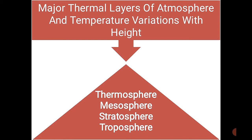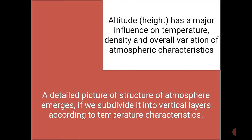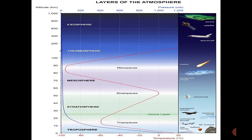Hello everyone, welcome to my channel. Today our topic under discussion is temperature variations with height in the major thermal layers of atmosphere. The major thermal layers are troposphere, stratosphere, mesosphere, and thermosphere. Altitude has a major influence on temperature, density, and overall variation of atmospheric characteristics. In this picture, you can see the relationship between height and temperature in various layers.